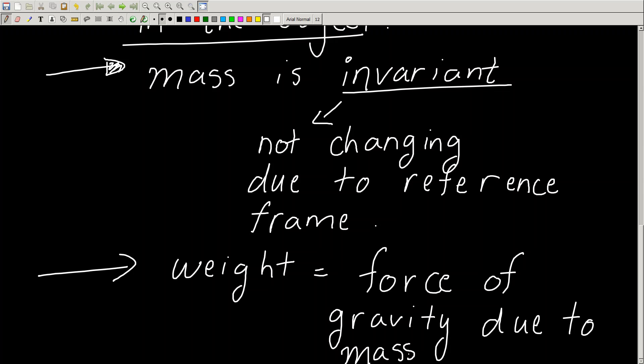But also it depends on what the mass of the object is. So if there's more stuff, if you have me and a guy who's six foot six, I'm not six foot six, I'm like five seven. If you have me and a guy who's six foot six, the guy who's six foot six would have more stuff in him, so his mass would be more.